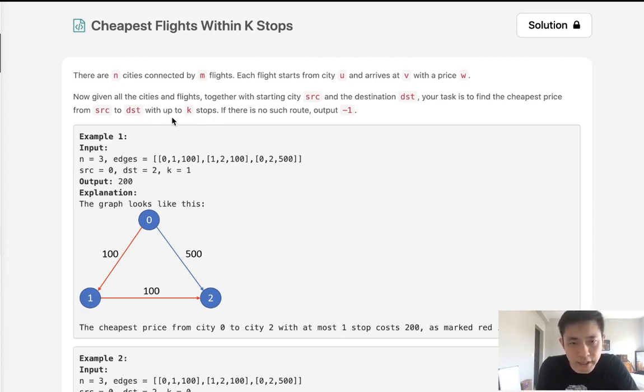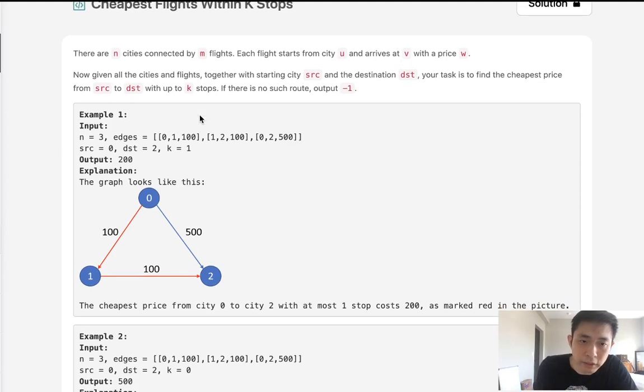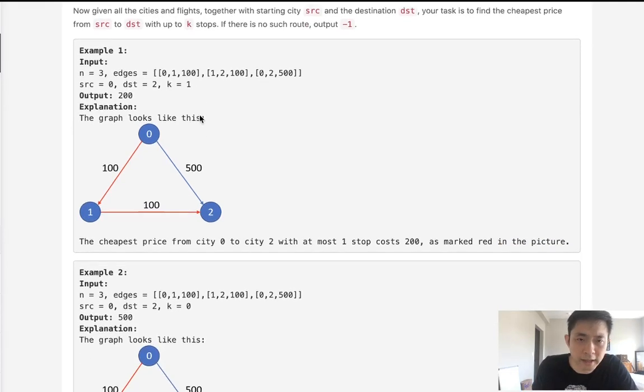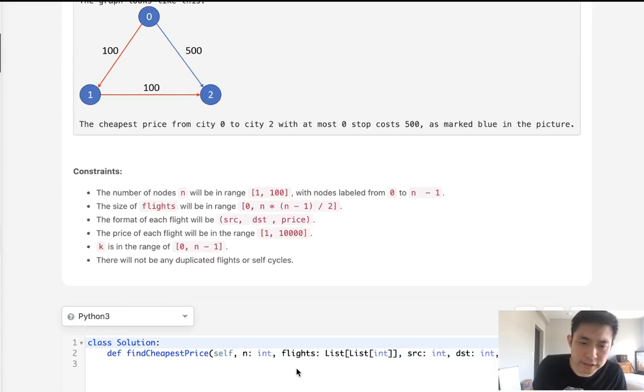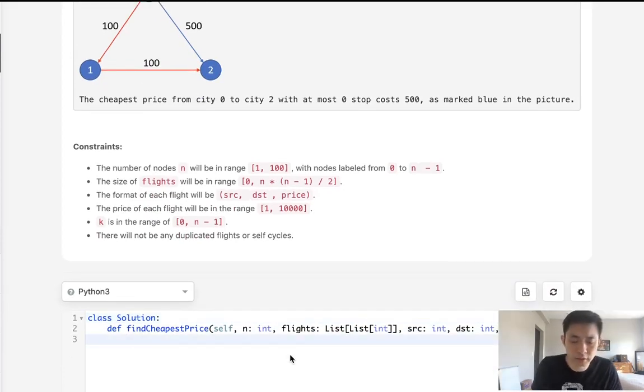So this is a variation of Dijkstra's algorithm, but the wrench here is that it's only going to be up to K-stops. With Dijkstra's algorithm, we always just minimize and minimize. We don't care how many stops we can make. But if you don't know Dijkstra's algorithm, I highly recommend you read up on that because this isn't going to make a lot of sense without it.